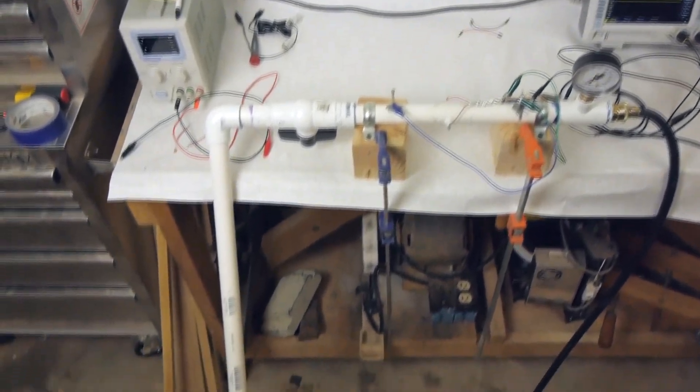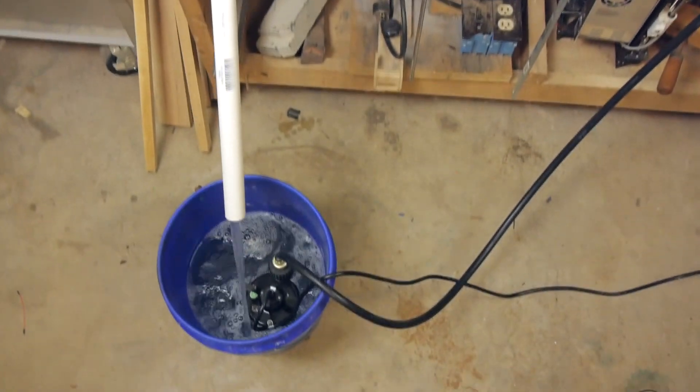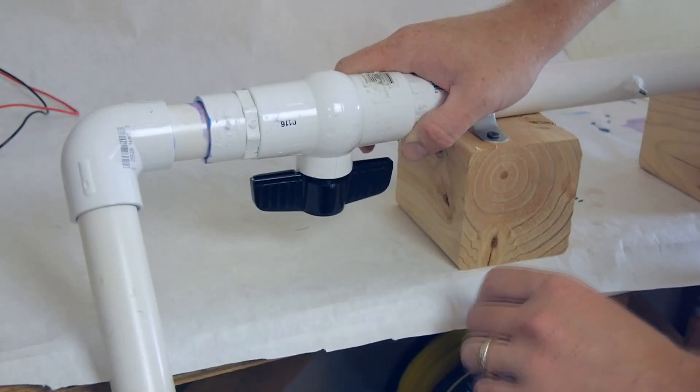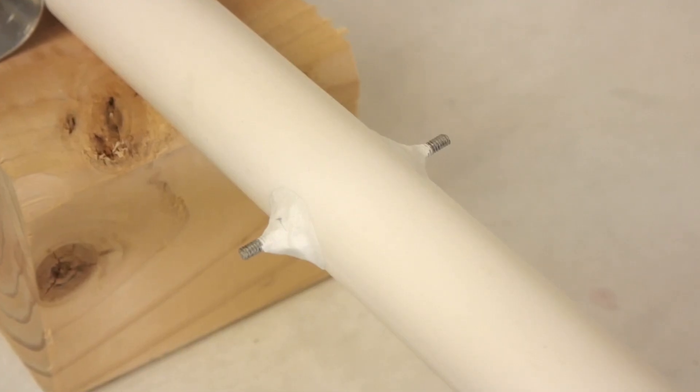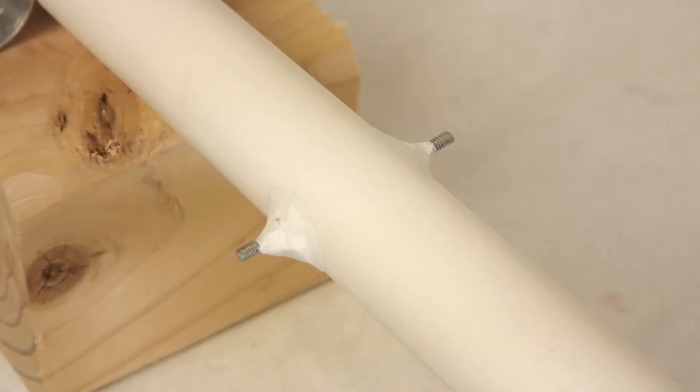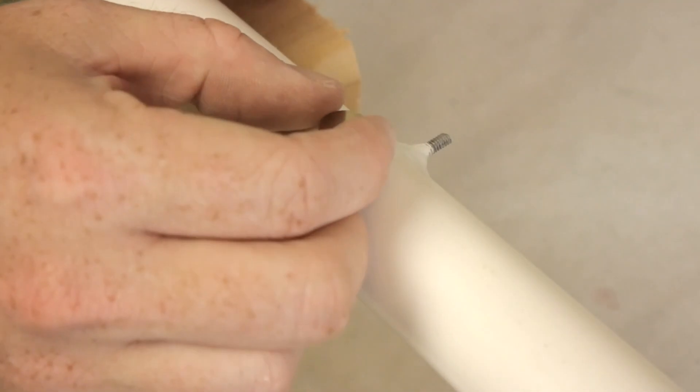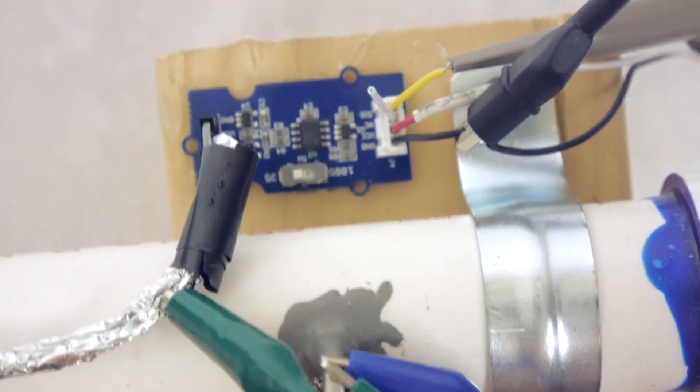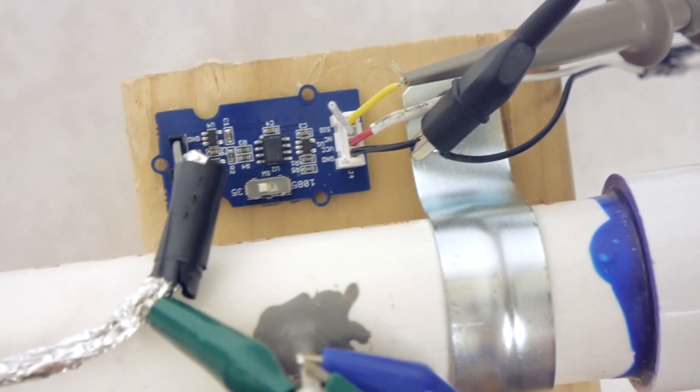Here's the test setup. I've got a length of PVC pipe with a pump on one side. I can control the flow of water using this valve. Two stainless steel bolts serve as electrodes to measure the EMF. And to create the magnetic field, I'm starting with two permanent neodymium magnets. I'm measuring the EMF using a differential amplifier to boost the signal into my oscilloscope.